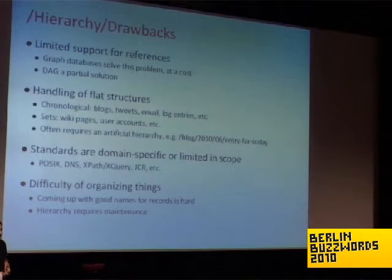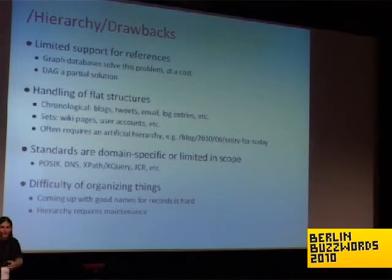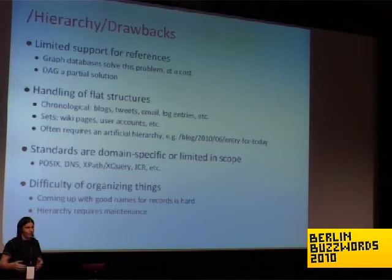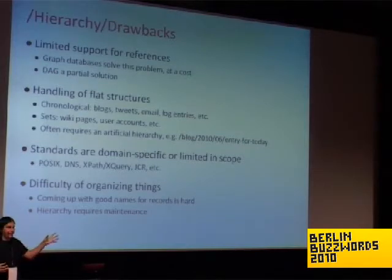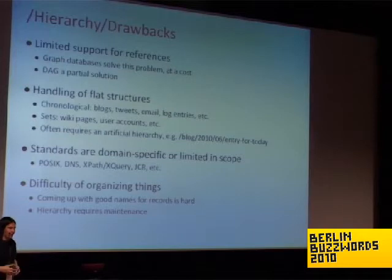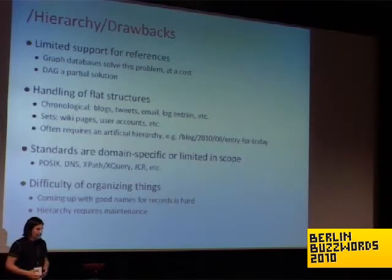However, there are drawbacks to this model too. You typically have only one form of inter-record relationship that's really well supported by the system, and that's the parent-child relationship. Other forms — like this record is related to this other record — are either soft references that may or may not work and probably aren't that efficient, or you go into graph databases that can do that more efficiently. But then you lose the self-similar recursive nature of the model, which comes with costs in both performance and the complexity of algorithms needed to process data.